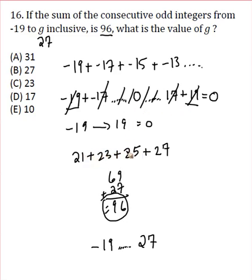Once you get to 21, now we're starting to get positive sums. So really this 21 plus 23 plus 25 plus 27, that's where you get your sum that adds up to 96. So we've got to add up to 27, choice B.